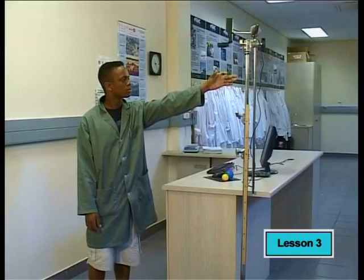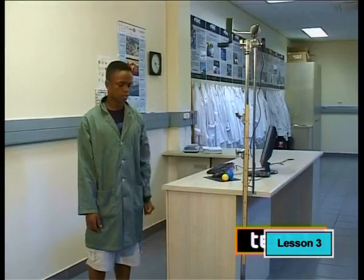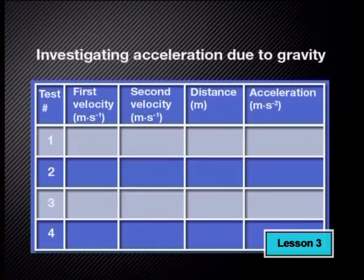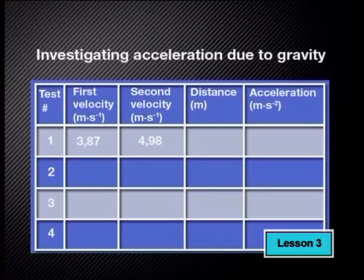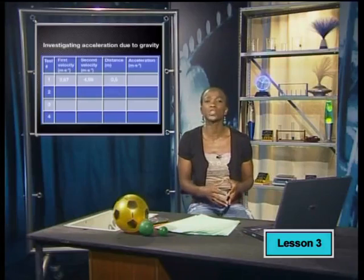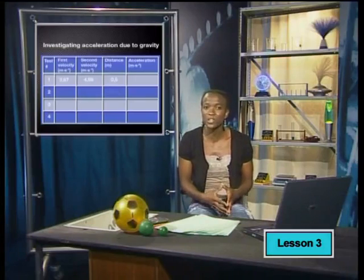Watch as he drops the ball. We'll call this test one. By looking at the readings, we can see that the first velocity is 3.87 meters per second, and the second has a reading of 4.98 meters per second. Remember that the distance over which we are measuring is half a meter, so we can automatically record this too. Before we move on to the second test, let's calculate the acceleration of the first ball.